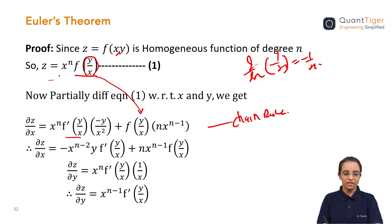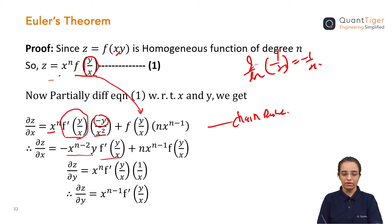Now if I simplify this — looking at x^n and x² having the same base, I subtract the powers to get x^(n−2), and take the −y outside as a constant. So ∂z/∂x simplifies to −y · x^(n−2) · f'(y/x) + n · x^(n−1) · f(y/x). I just rearranged the terms.